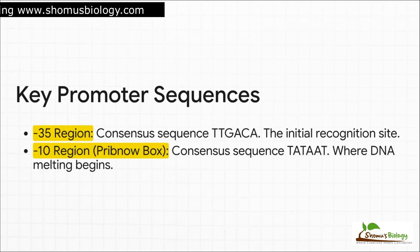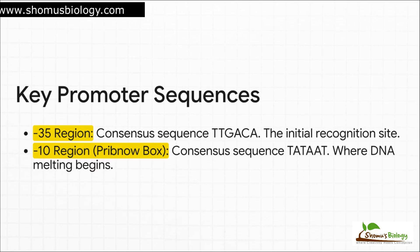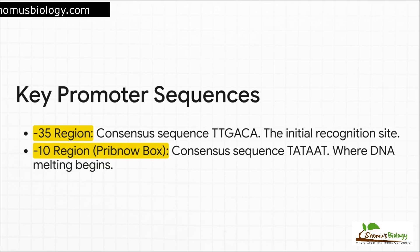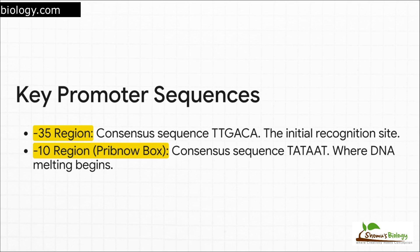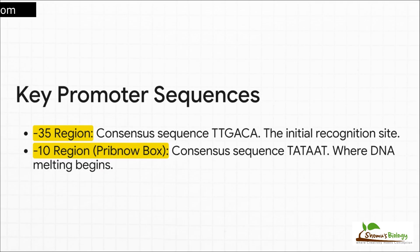These coordinates are super specific, and these two sequences are absolute high-yield facts for any exam. A consensus sequence is just the most common ideal version of that signal. At the negative 35 region, you have the initial handshake site, but the real action starts at the negative 10 region, also called the Pribnow box. See how it's full of A's and T's? A-T pairs are held together by only two hydrogen bonds, unlike G-C pairs which have three. That makes this spot much easier to pull apart, which is perfect for starting to unwind the DNA.